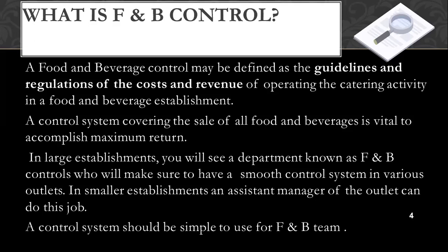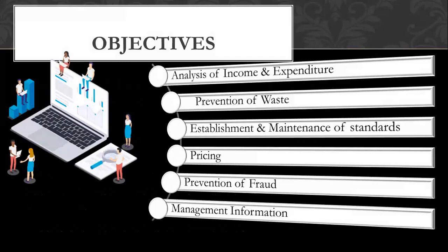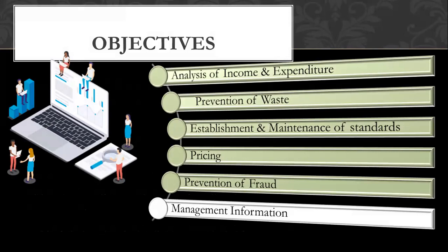A very important note: a control system should be simple to use for the entire food and beverage team. The objectives of food and beverage control are: analysis of income and expenditure, prevention of waste, establishment and maintenance of standards, pricing, prevention of fraud, and management information.